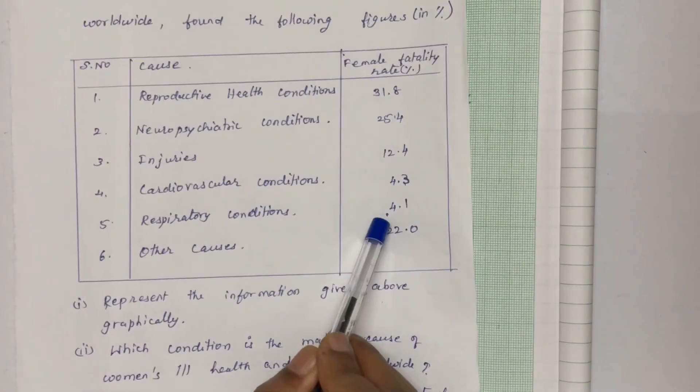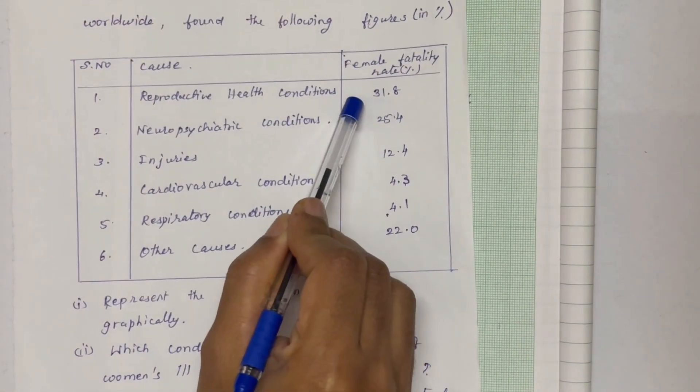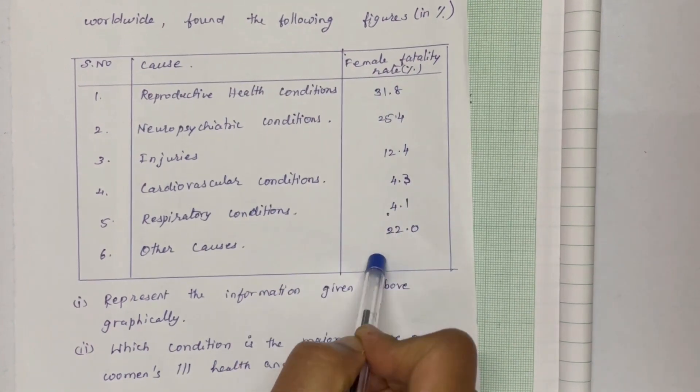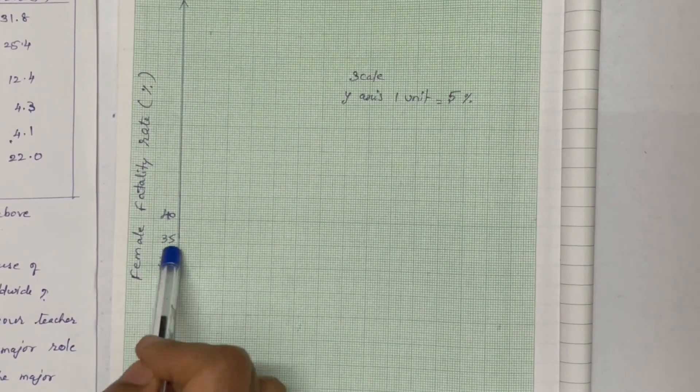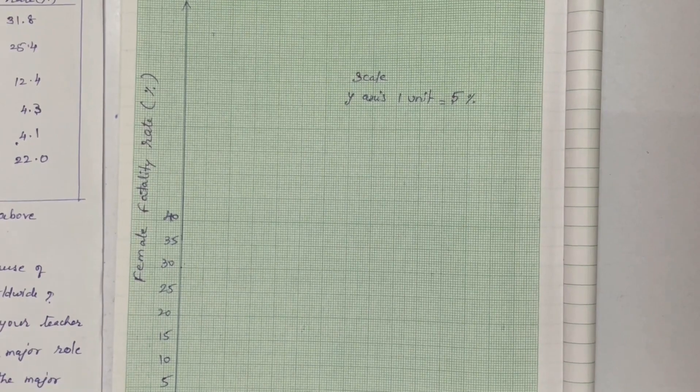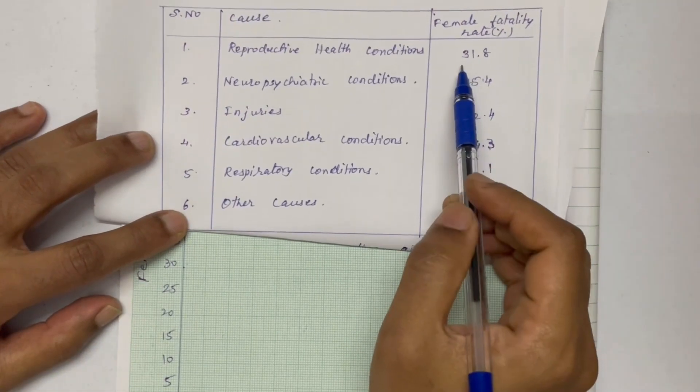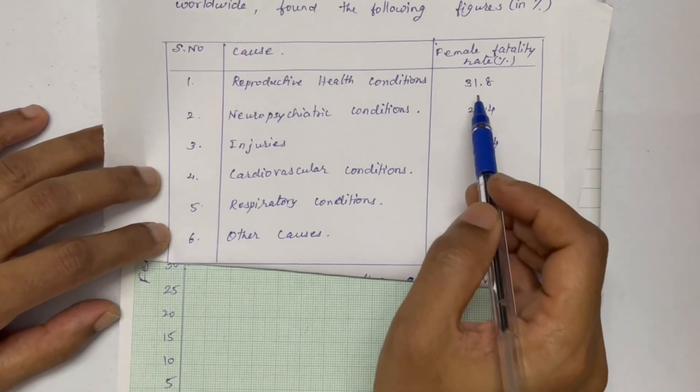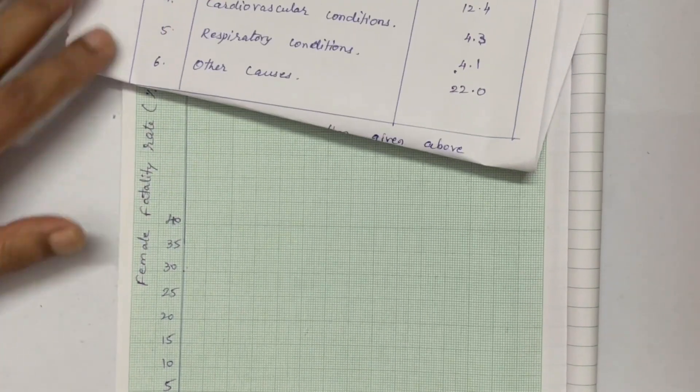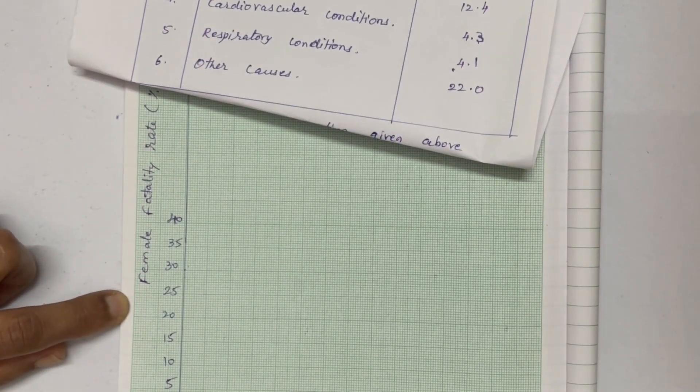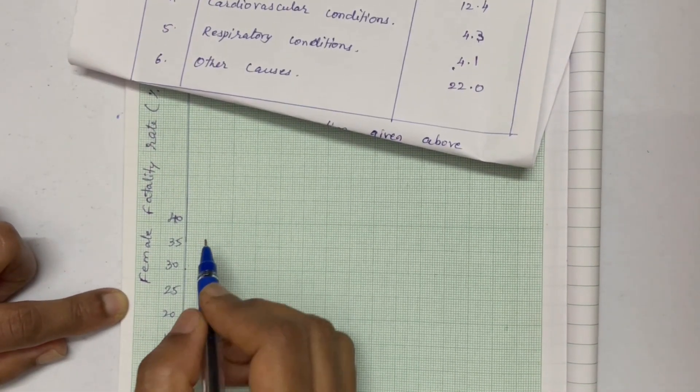The number goes 5, 10, and so we have a number of 5, 10 in the range. Now we have to plot. Reproductive Health Condition is 31.8. We have to round to 32. Reproductive Health Condition is 32.